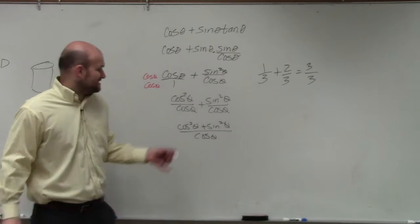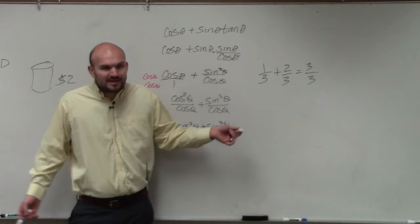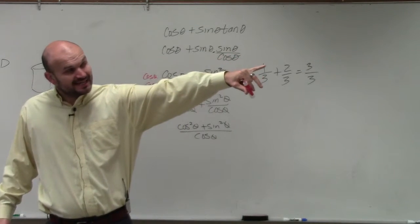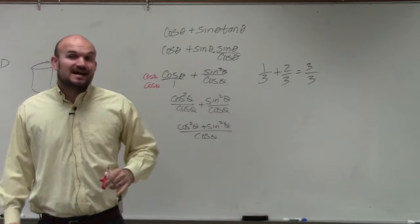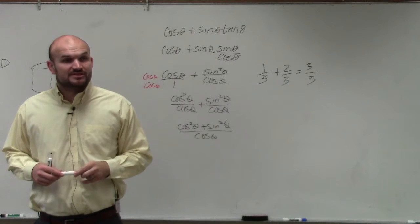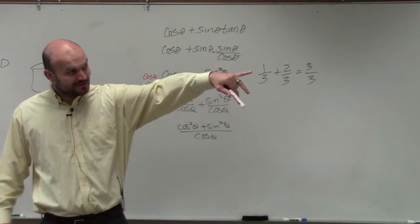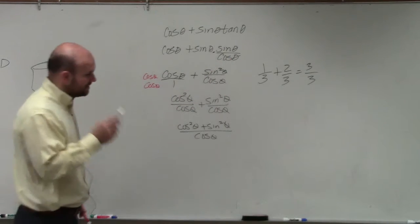Now again, I don't know how to add sine and cosine. Those aren't like terms. I can't add them. However, I can look at my trigonometric identities and realize that sine squared plus cosine squared is equivalent to... Well, let's look on the board. Sine squared plus cosine squared is equal to 1.